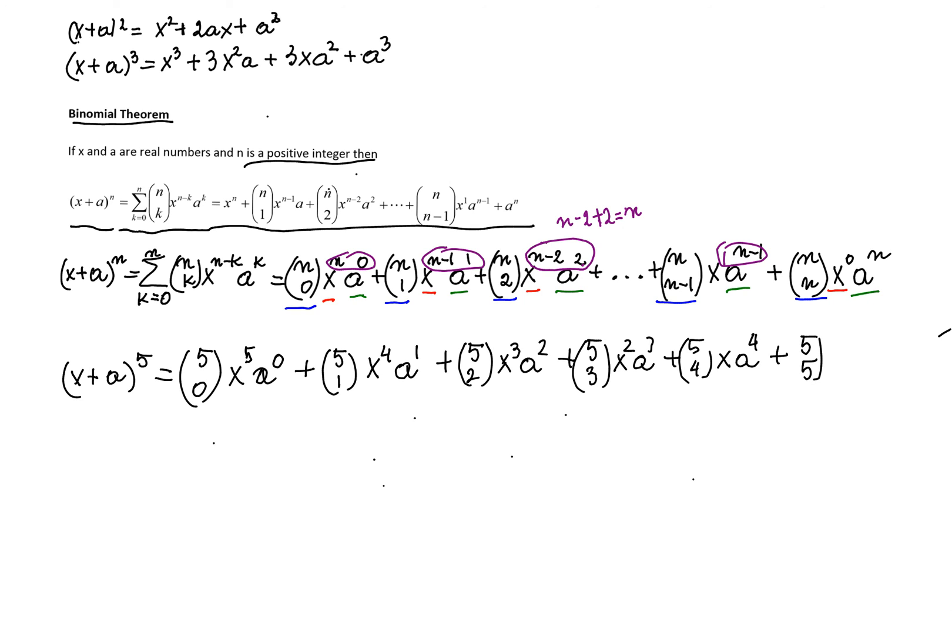And we'll have 5 choose 5, that's where we know we stop. We'll have x to the 0 and a to the fifth power. And we'll have the expansion of the fifth power of binomial x plus a.